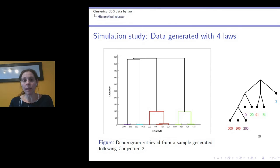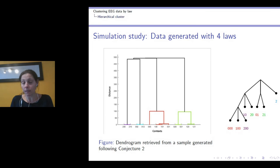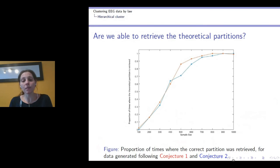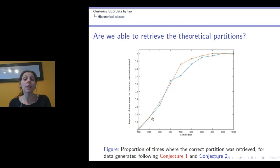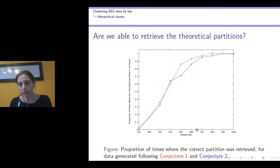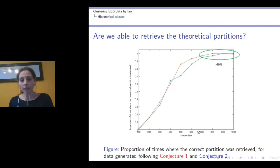These are just two replicates across different sample sizes. The figure shows in red the number of times the theoretical partition was retrieved for conjecture 1, and in blue for conjecture 2, across different sample sizes. As the sample size grows, the procedure is able to identify the theoretical partition. Moreover, with a sample size greater than 700, this happens in more than 90% of the cases.